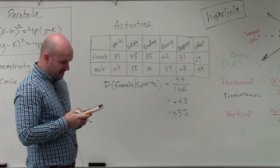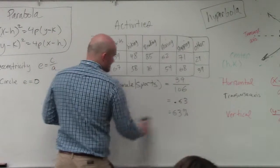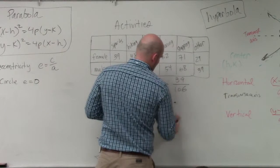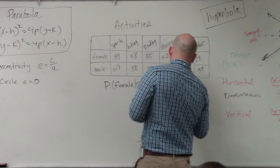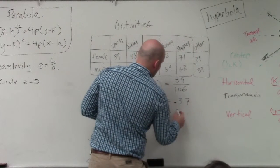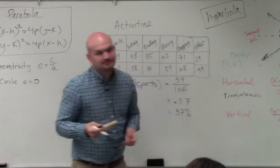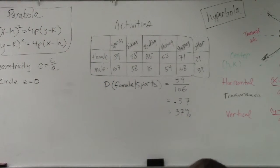So therefore, let's do 39 divided by 106. That gives us 0.36. Let's round that out to 37%. Anybody have any questions on that?